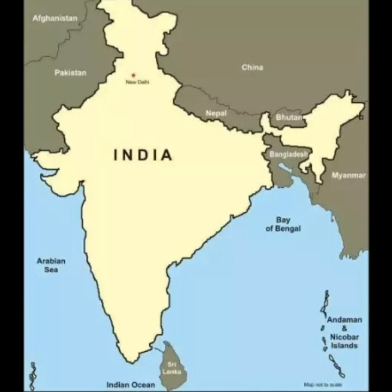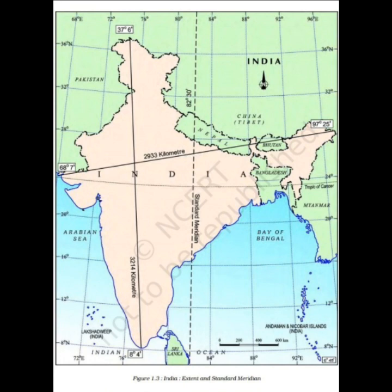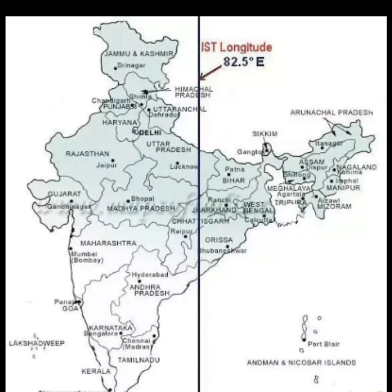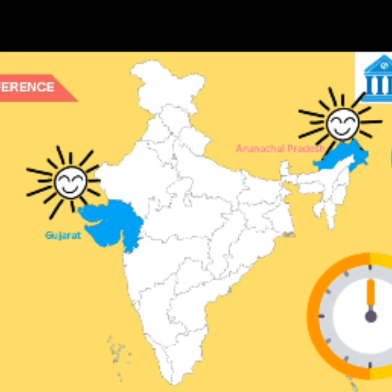The latitudinal and longitudinal extent of the mainland is about 30 degrees. Despite this, the east-to-west extent appears smaller than the north-to-south extent. From Gujarat to Arunachal Pradesh, there is a time lag of two hours because the sun rises earlier in Arunachal Pradesh — two hours before it rises in Gujarat. The standard meridian of India passes through Mirzapur in Uttar Pradesh and is taken as the standard time for the whole country.